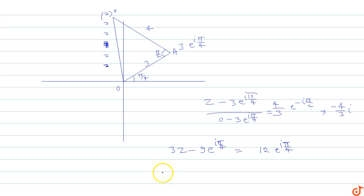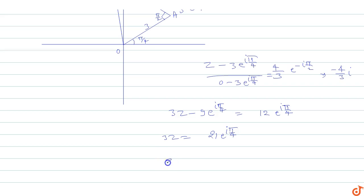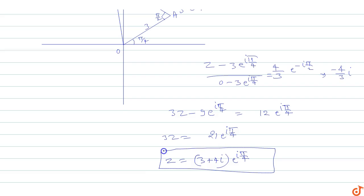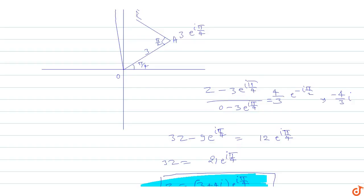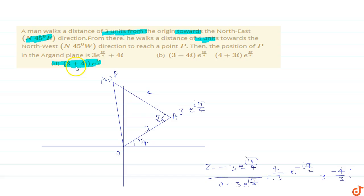So 3z equals 21e^(iπ/4). Therefore z equals 7e^(iπ/4), which is the complex number associated with point P. This equals (3 + 4i)·e^(iπ/4). So z equals (3 + 4i)e^(iπ/4), which is Option D — the correct option. The final position of point P is (3 + 4i)e^(iπ/4).